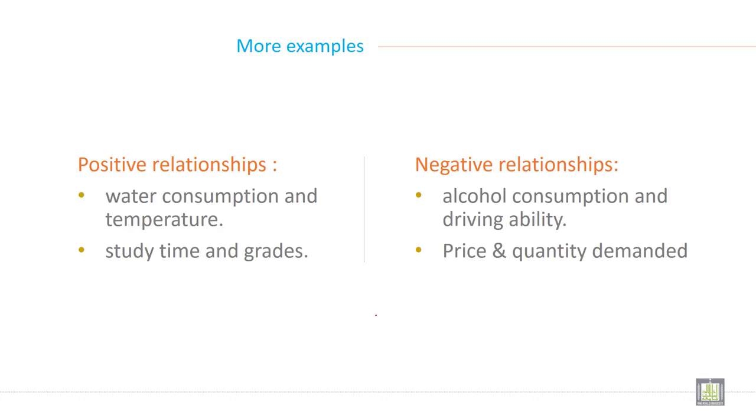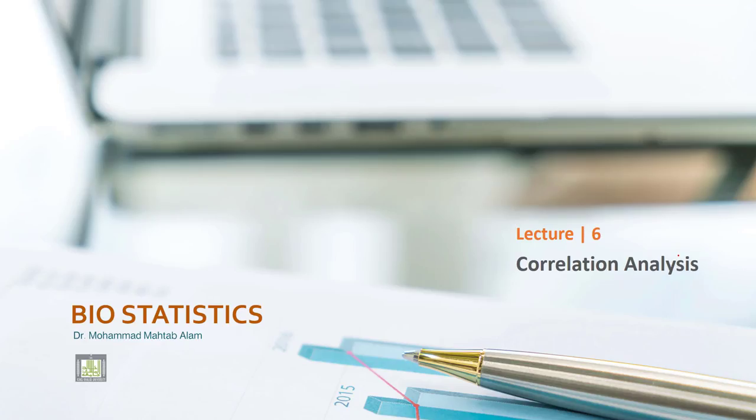Here are more examples of positive and negative correlation. Positive: water consumption and temperature, both going in the same direction. Study time and grades - if you study more, your grade will be good. Negative relationship: Alcohol consumption and driving ability - if you consume more alcohol, you drive worse. And price and quantity demanded. These are a few examples of positive and negative correlation.